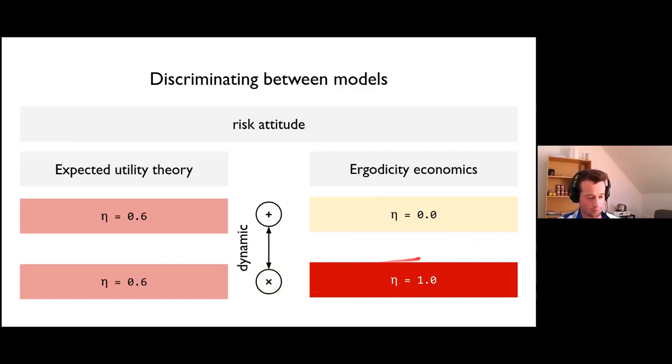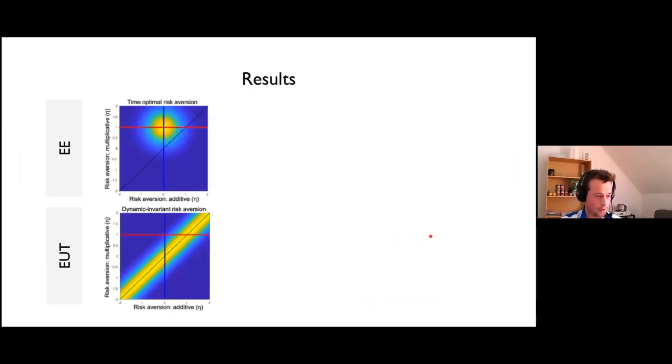It can differ between different subjects but not between dynamics. On the other hand, we got ergodicity economics, which states that subjects are really trying to maximize the rate at which the wealth grows. It gives very specific prediction regarding the risk attitudes when the dynamics change. For example, in the additive dynamic it predicts that subjects should be risk neutral. On the other hand, in multiplicative it should be risk averse. This is the same thing shown in a different way.